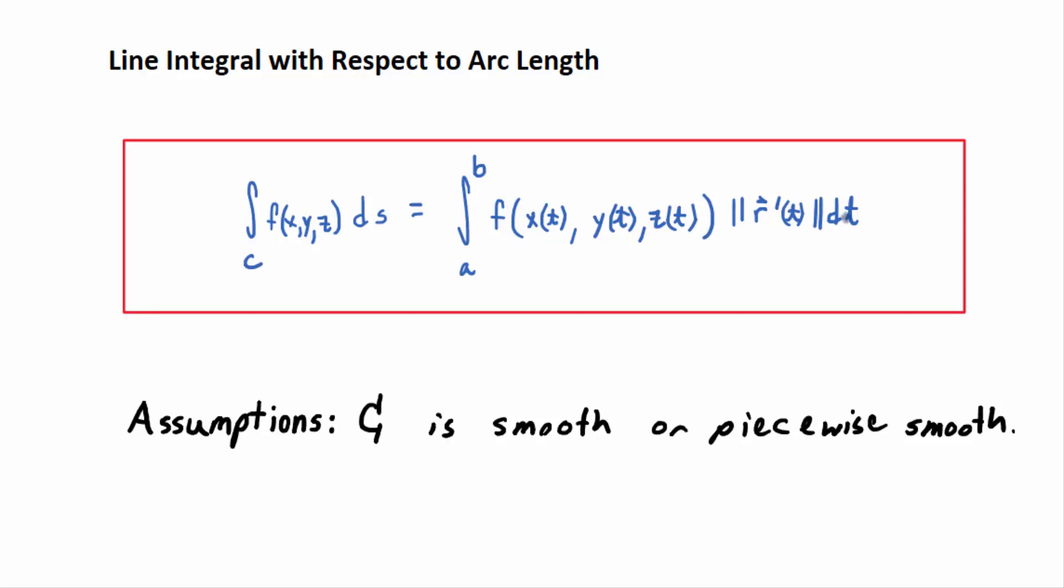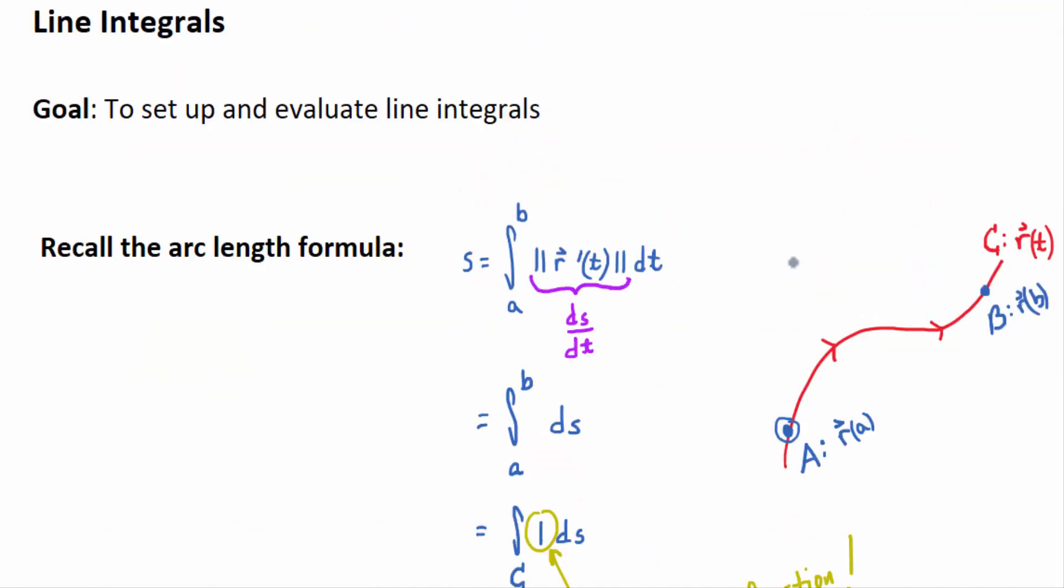Just to remind you, we think of ds as an infinitesimally small piece of arc length. So if you could break up that curve in the picture I had above into an infinite number of little subarcs, we can't. So the actual distance between the subarcs we call delta s.